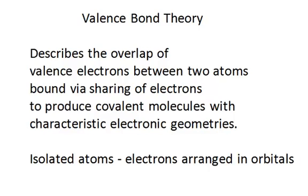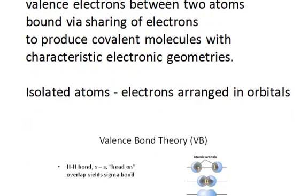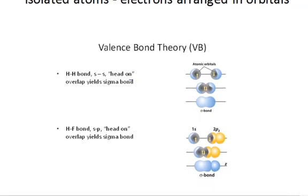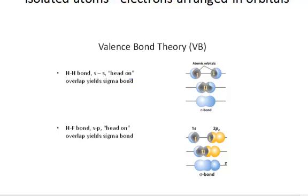The valence bond theory helps us move from isolated atoms, the location of electrons in the valence shell of isolated atoms, to the location of electrons in covalently bound molecules.